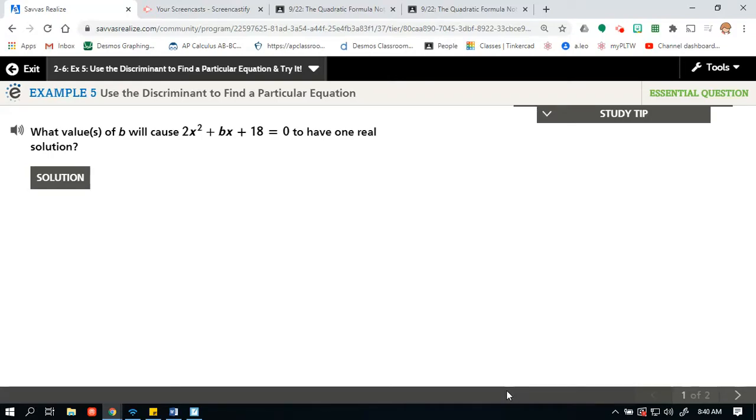Hello, everybody. In this video, we are going to look at some more exciting maths from topic 2, lesson 6, and we're going to look at example 5, using the discriminant to find a particular equation.